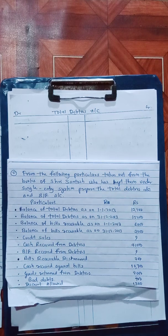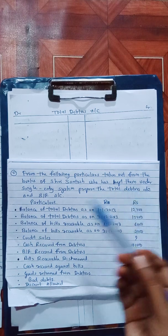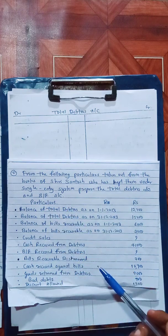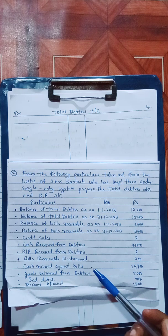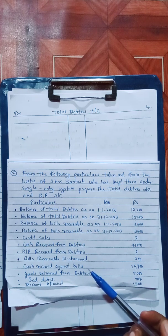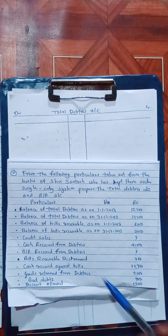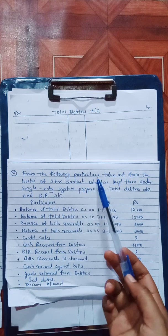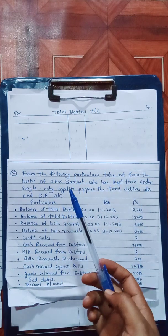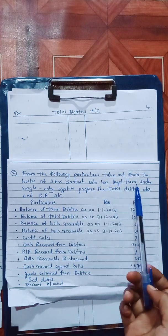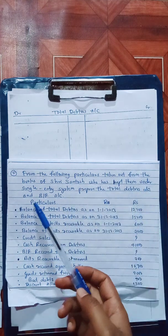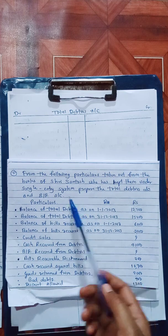Hello everyone. This is the second video on calculation of total debtors account and bills receivable account. In the first video we saw the format; in this video we will see how many accounts are prepared. First we see the question: from the following particulars taken out from the books of Shri Santosh, who has kept them under single interest system, prepare the total debtors account and bills receivable account.